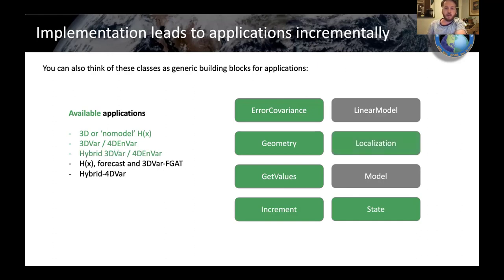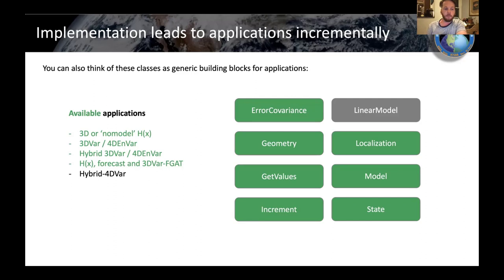If you add localization — technically needed for hybrid operations, and again taken care of by SABER — and if you add the model itself, meaning you can actually drive the forecast and interact with the model state as it's running, you can do more interesting things like run 4D H(x) in-core, FGAT-type things, or just a forecast itself. And then if you add the linear model, you can do the full 4DVAR application. Of course, you have to develop the linear model, which might not be straightforward, but once you implement it, you get the 4DVAR application.